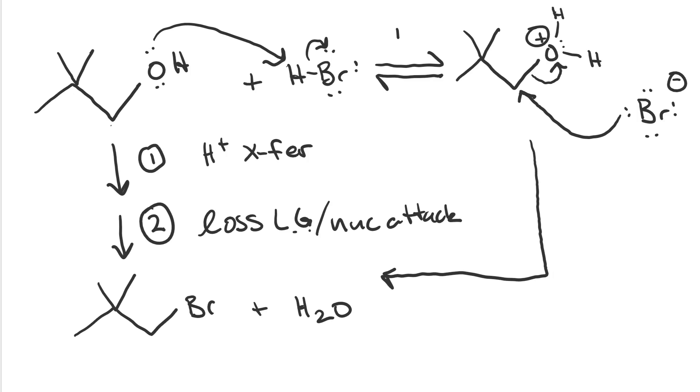So you can see, step one, that was proton transfer. We transferred a proton to the alcohol because hydroxide is a poor leaving group, and the resulting water is a good leaving group.